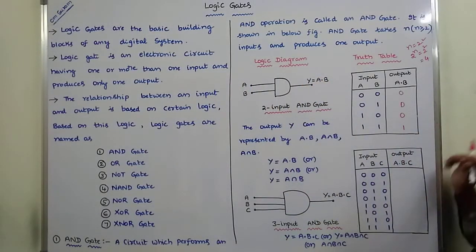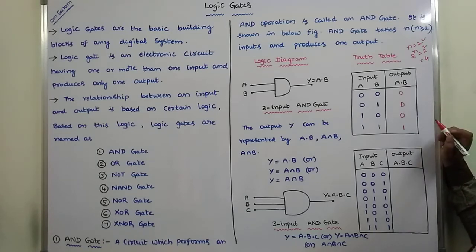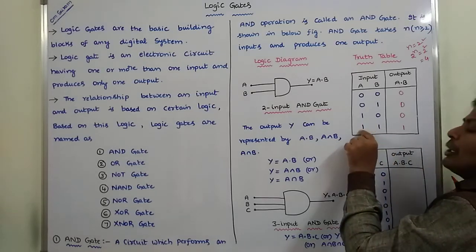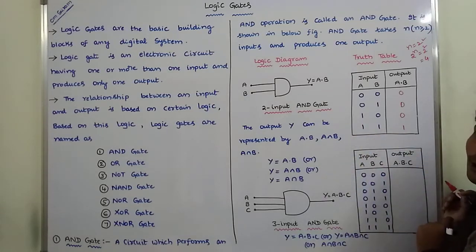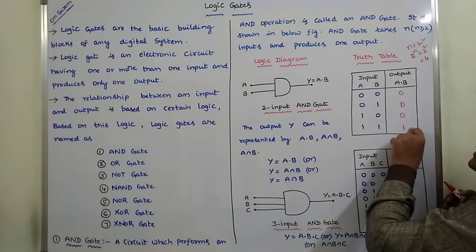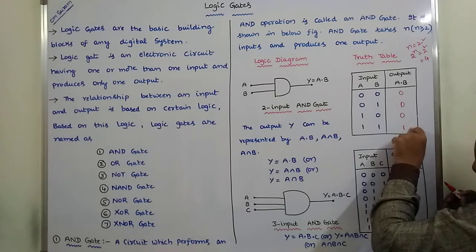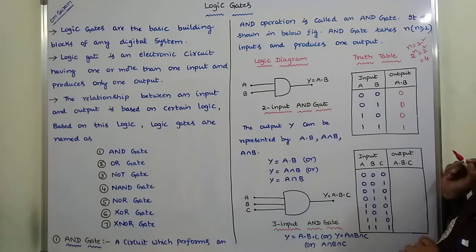In the case of the 2-input AND gate, the output value is 1 only when A equals 1 and B equals 1. If both inputs have value 1, the output is 1; in all remaining cases, the output is 0.